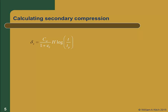Computing secondary compression settlement is very simple. The governing equation has the same form as our primary consolidation equation, except that C sub alpha replaces C sub C and the log of time replaces the log of effective stress. In this equation, T is the time after the start of primary consolidation and T sub P is the time required to complete primary consolidation. We'll learn how to calculate T sub P in the next chapter. For now, it will be given to you.